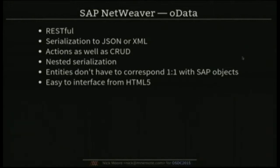OData is an interesting one. It is basically RESTful and does serialization in JSON and XML. It supports actions as well as just CRUD operations, so you can say, 'I really don't feel this fits well into REST at all, I'm just going to make up an action and use that instead.' It lets you do nested serialization, which is handy — it means you can grab whole documents at a time instead of having to grab little bits and then their children and their children.